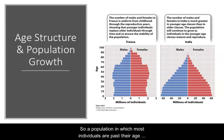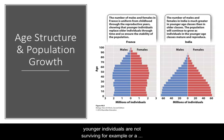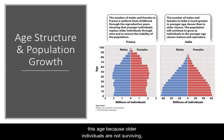A population in which most individuals are past their age of greatest reproduction — because young are not surviving, for example — or a population mostly composed of individuals younger than this age because older individuals are not surviving, won't increase as rapidly as one dominated by individuals with great reproductive output.